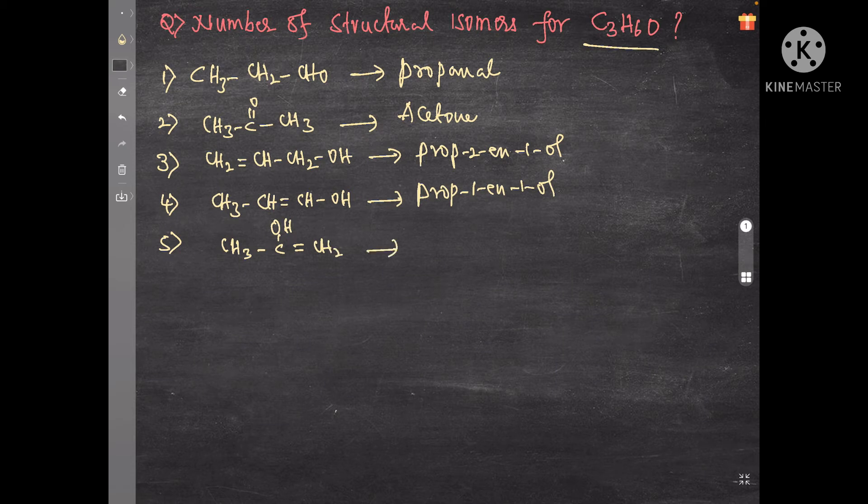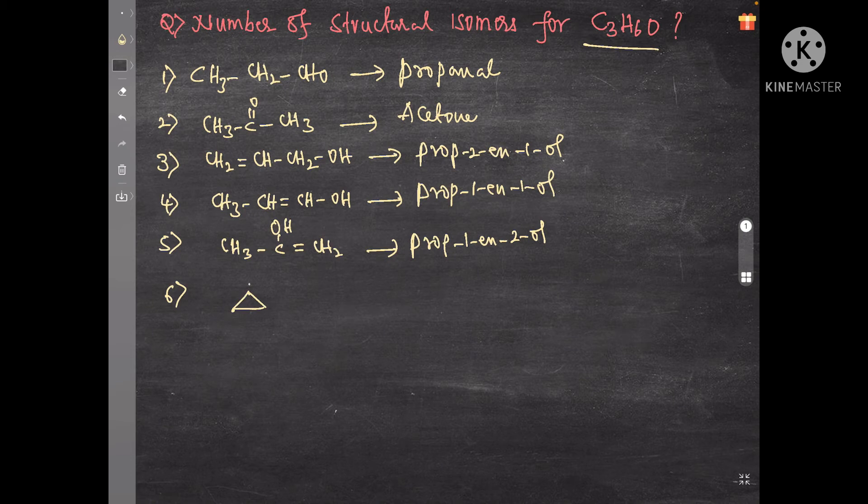This compound name is prop-1-en-2-ol. The sixth one is, even cyclic compounds are also possible, so